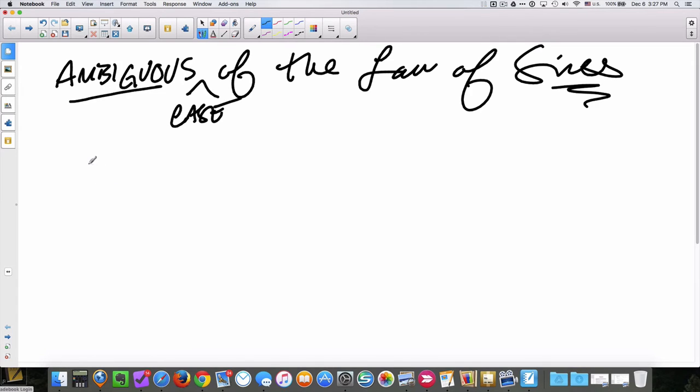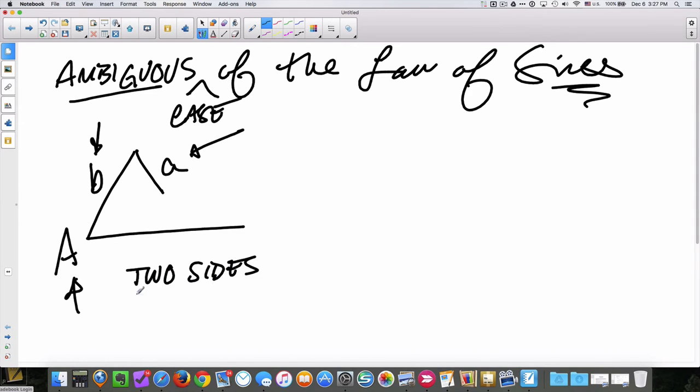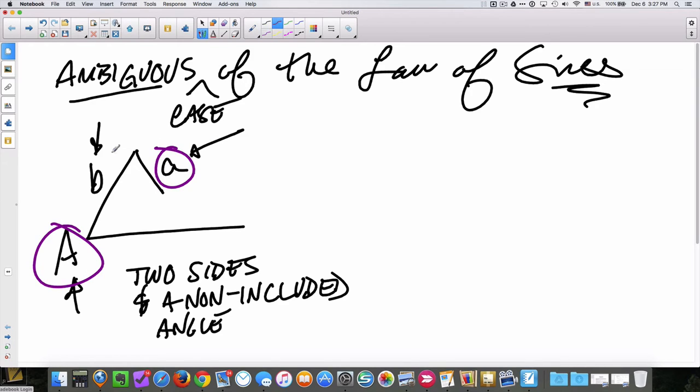To best identify or most easily identify the ambiguous case, is if you were to get the following pieces of information. This particular situation exists: you get an angle and the length of two sides. This side and that angle and this side, and we would call that situation two sides and a non-included angle. In other words, you get one of the matching pairs, a and A, and a different side.